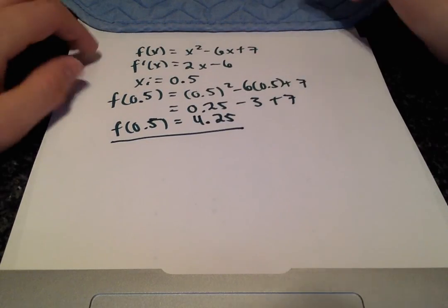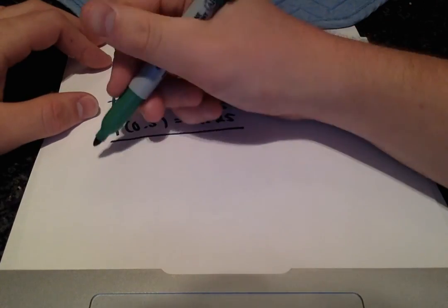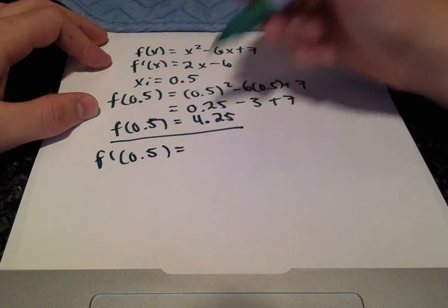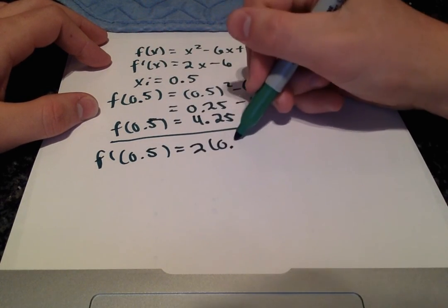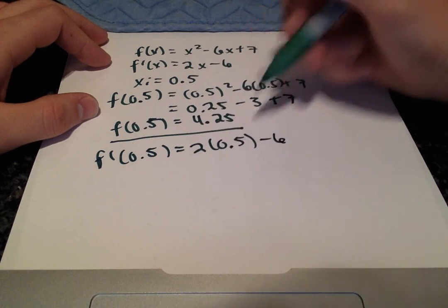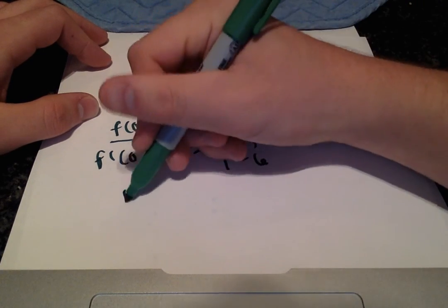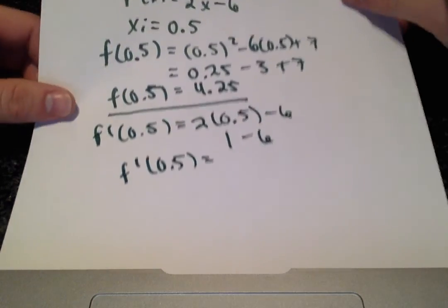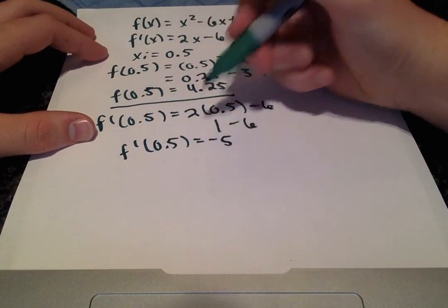So that will become useful when we need to plug it into the formula. And f prime of 0.5 is just 2 times 0.5 minus 6 or 1 minus 6. f prime of 0.5 is equal to negative 5.